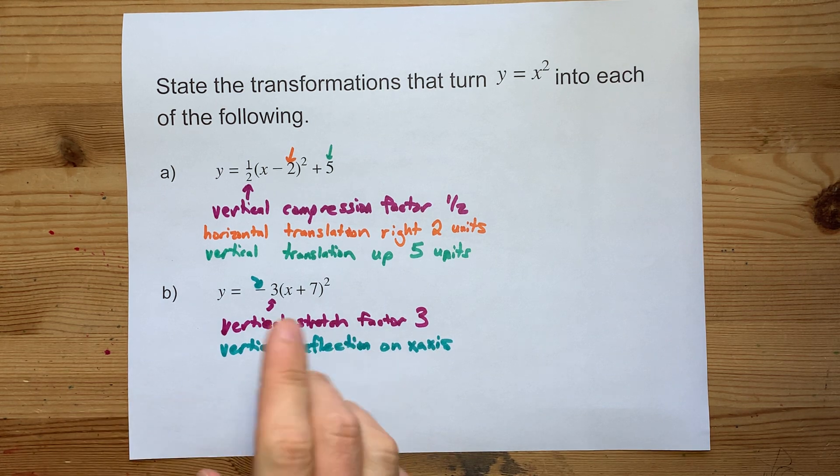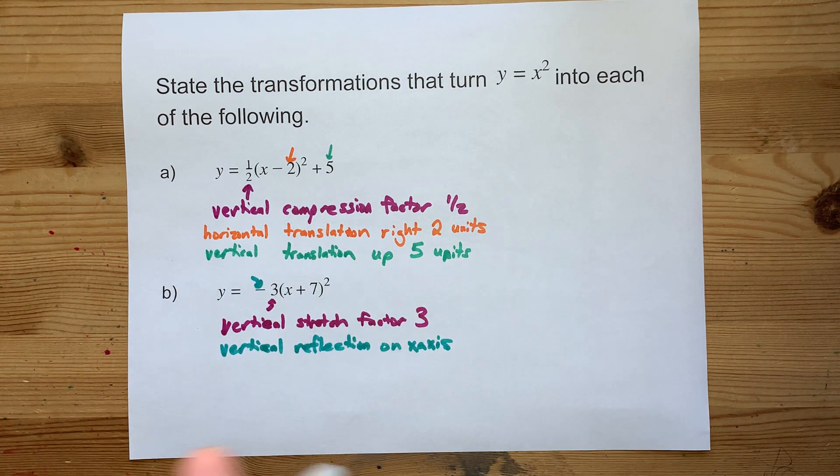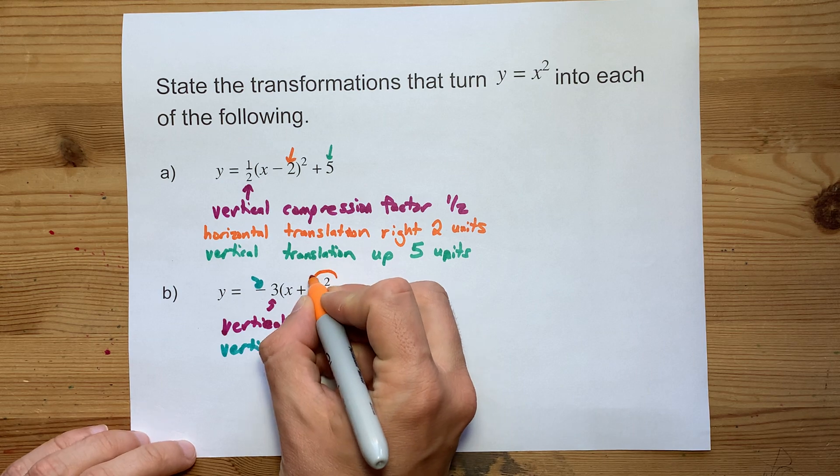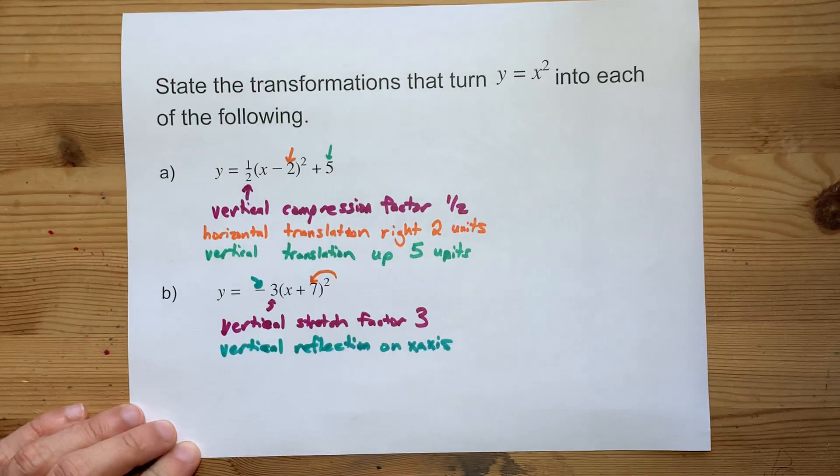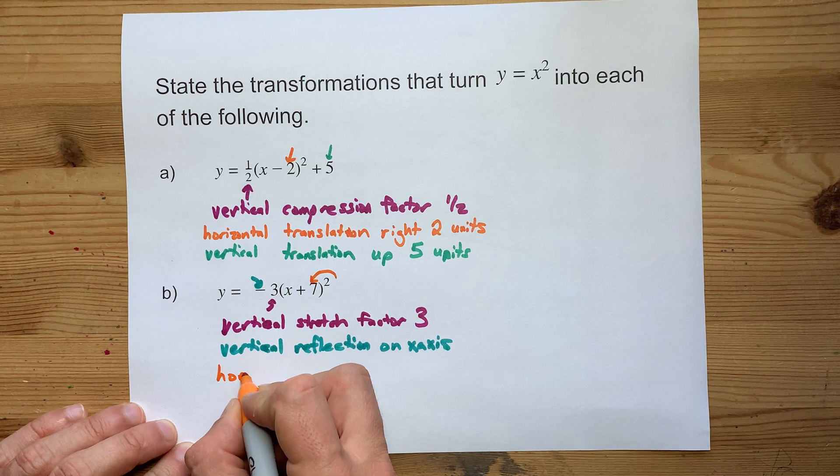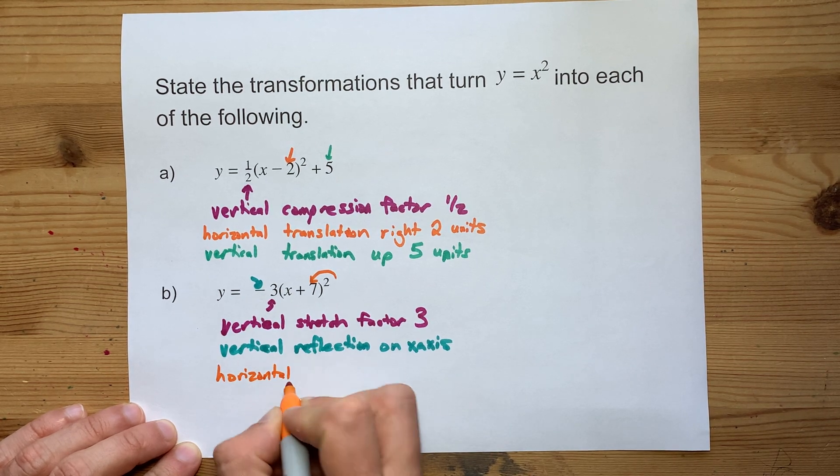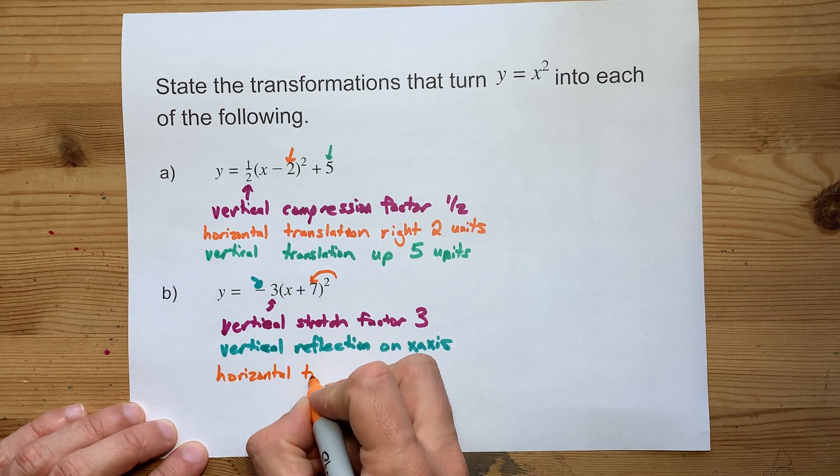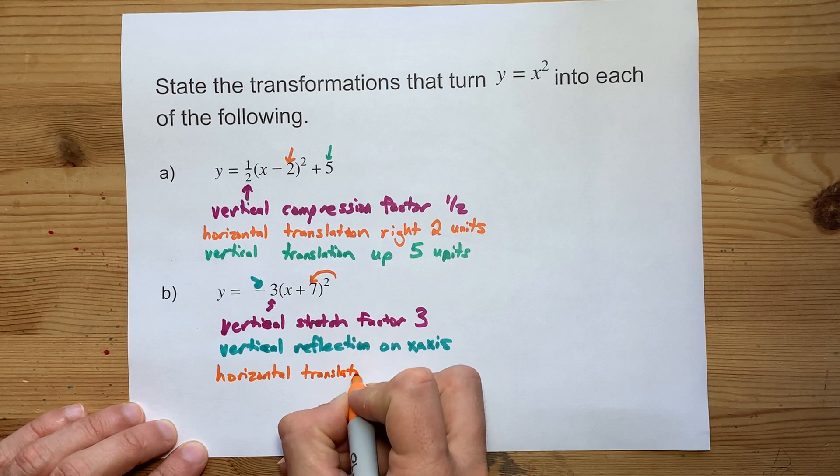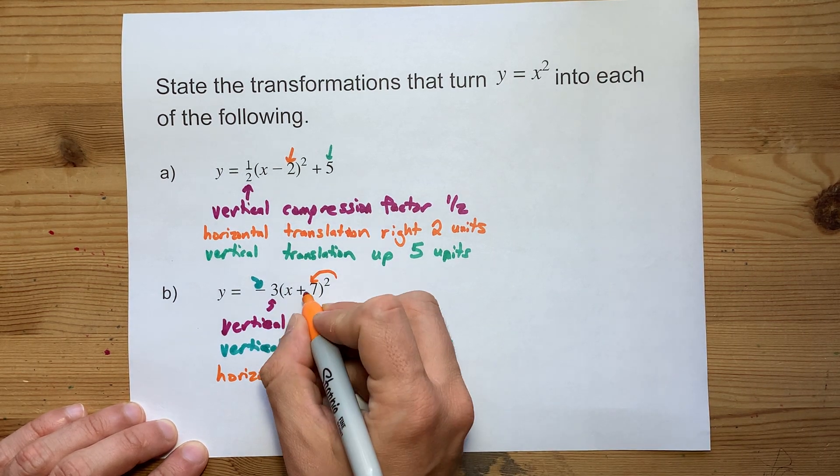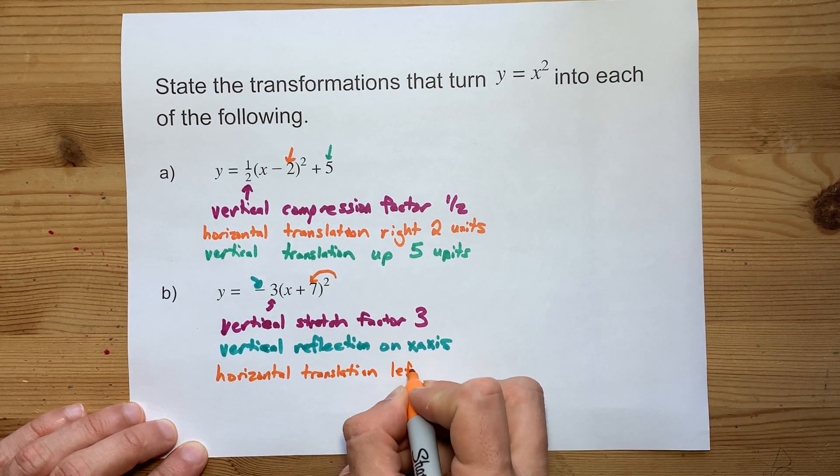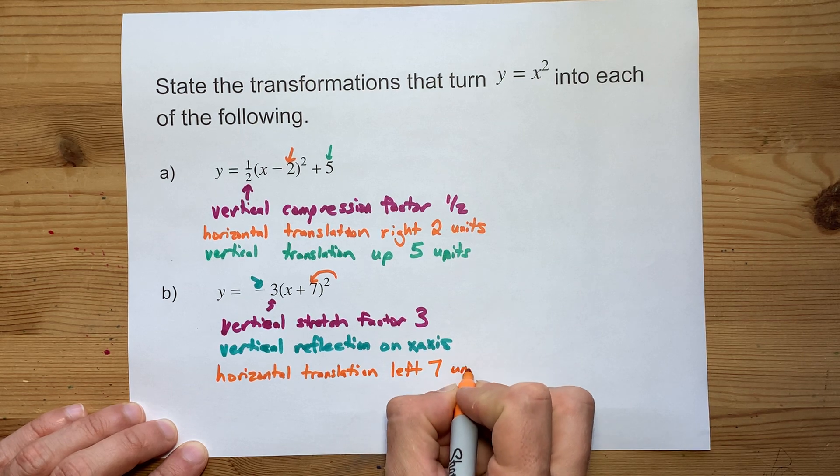Now, we only have one other transformation here. Here, there's a plus 7 inside the brackets with the x. Because it's inside the brackets, it's horizontal. Because it's added or subtracted, it's a translation. Plus 7 means to the left by 7 units.